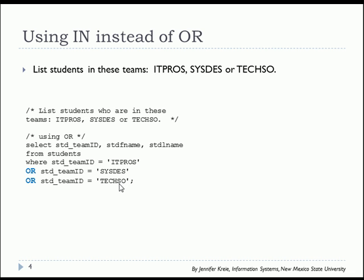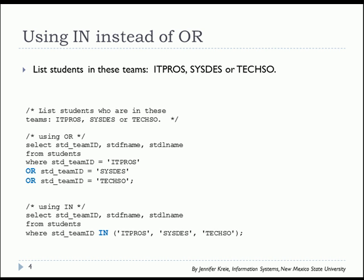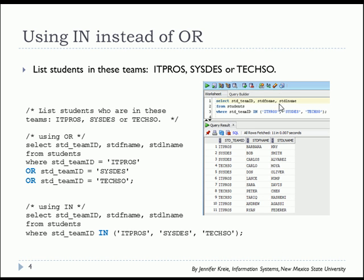You could type all of that out, but a quicker, faster, and easier to read format would be to use IN. So in the WHERE clause we have student team ID IN, and then in parentheses we have listed the three values that we want to check for. And we get the results — you'll get the same results for either one of these approaches.